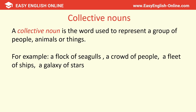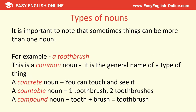We also have collective nouns. A collective noun is the word used to represent a group of people, animals, or things — it's the name of a group. For example, a flock of seagulls, a crowd of people, a fleet of ships, or a galaxy of stars. It's important to note that sometimes things can be more than one noun — for example, a toothbrush is a common noun, a concrete noun (you can touch and see it), a countable noun (one toothbrush, two toothbrushes), and a compound noun (tooth plus brush equals toothbrush).